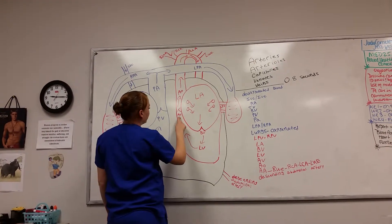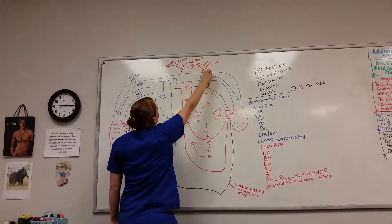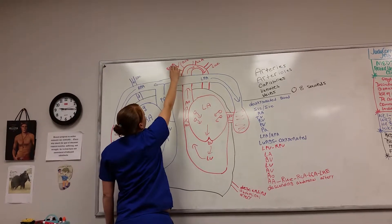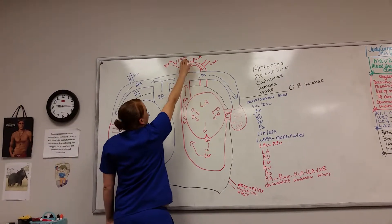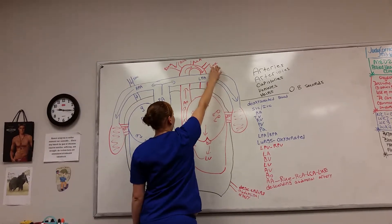It goes up to the aortic valve, to the aorta, to the aortic arch. And it branches off into the right upper extremity, the right carotid artery, the left carotid artery, and the left upper extremity.